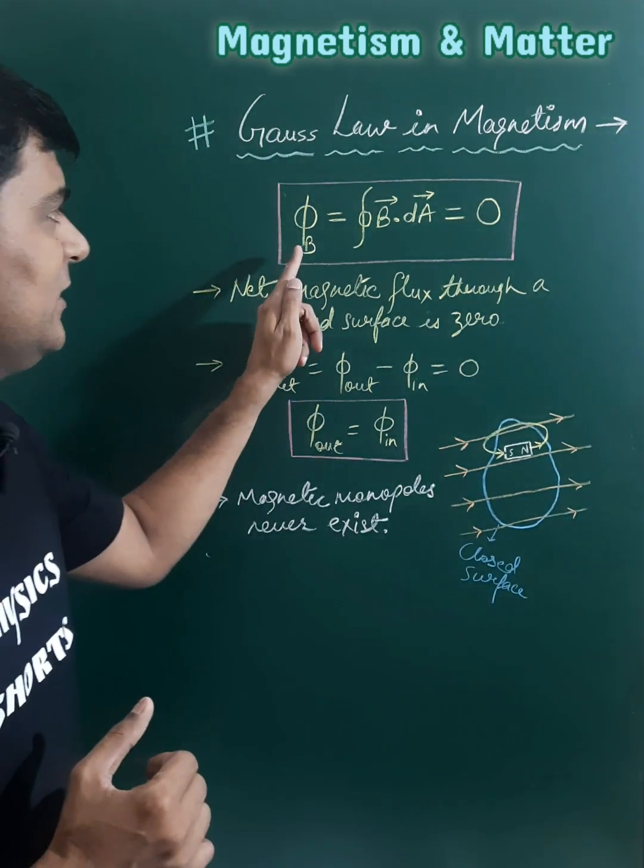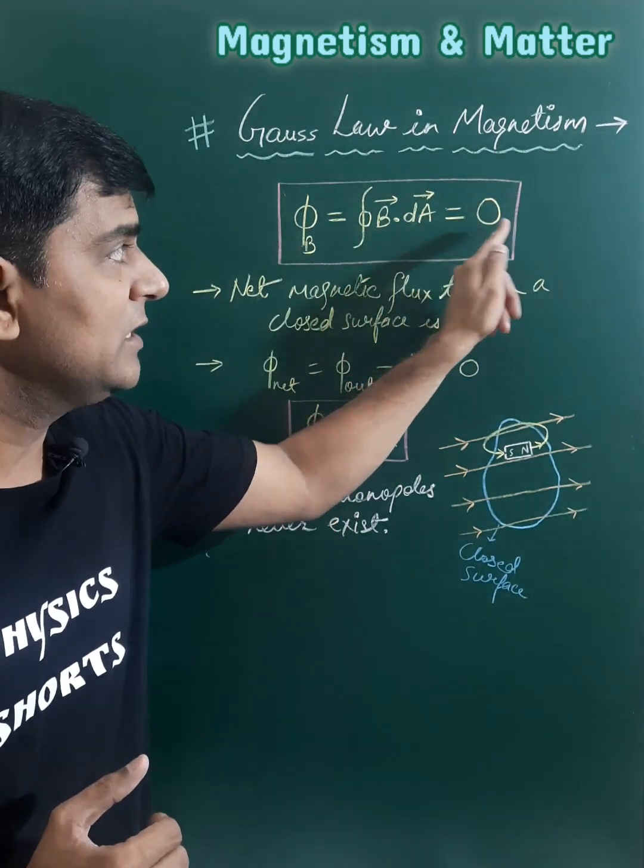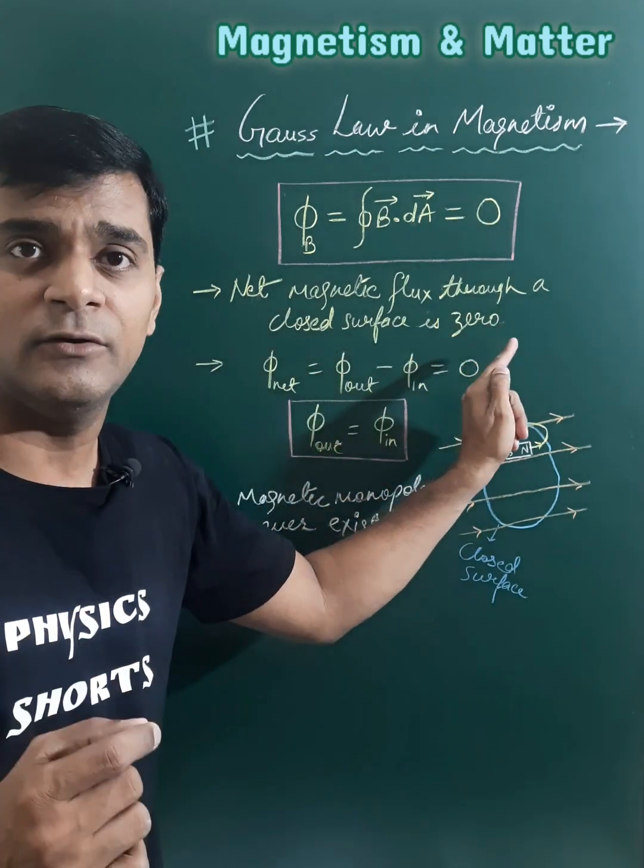According to this law, we can say that phi B, which is the closed surface integral of the magnetic field, is always equal to zero. The net magnetic flux through the closed surface is zero.